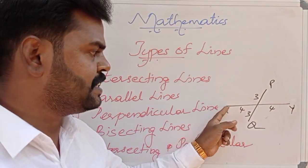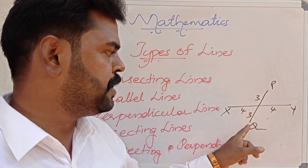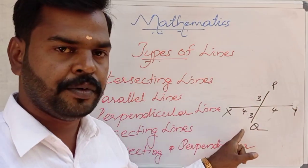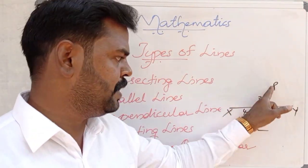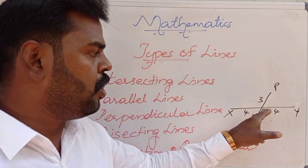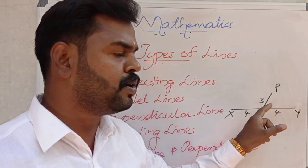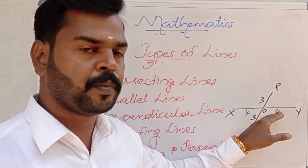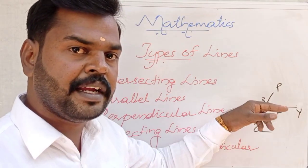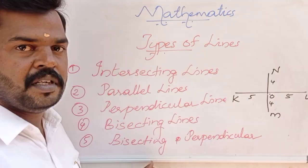Now let us discuss bisecting lines. Line segment XY — from here to here is four, and from here to here is also four, total eight. Next line segment PQ — here to here is three, and here to here is also three. These two line segments XY and PQ intersect at point O. The point O divides PQ into two equal parts, and O also divides XY into two equal parts. So bisecting lines are two line segments that touch and divide each other into two equal parts.